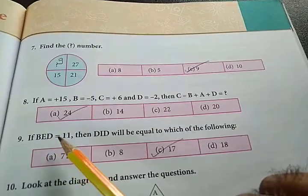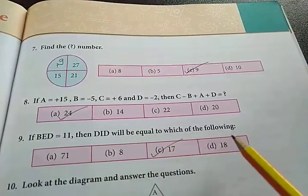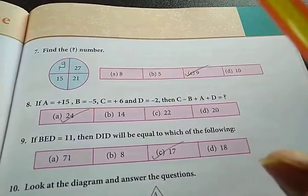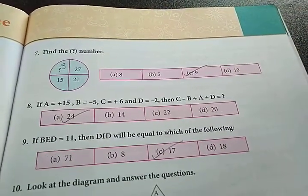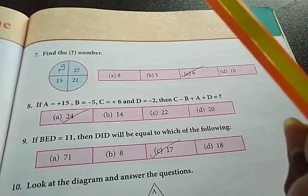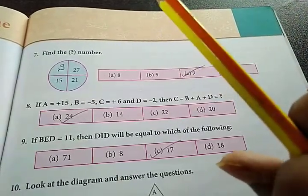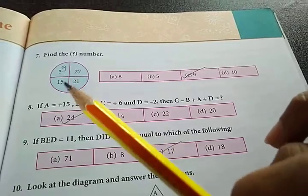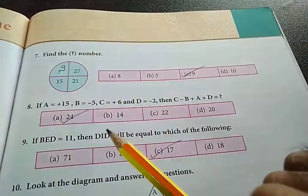If B, E, D is equal to 11, then D, I, D will be equal to which of the following? Look, B, E, D equals 11 means they took the alphabets - in the alphabet series, which number that alphabet is on, they took that number. Like B is on number 2, E is on number 5. 2 plus 5 equals 7, and D is on number 4. 2 plus 5 plus 4 equals 11.